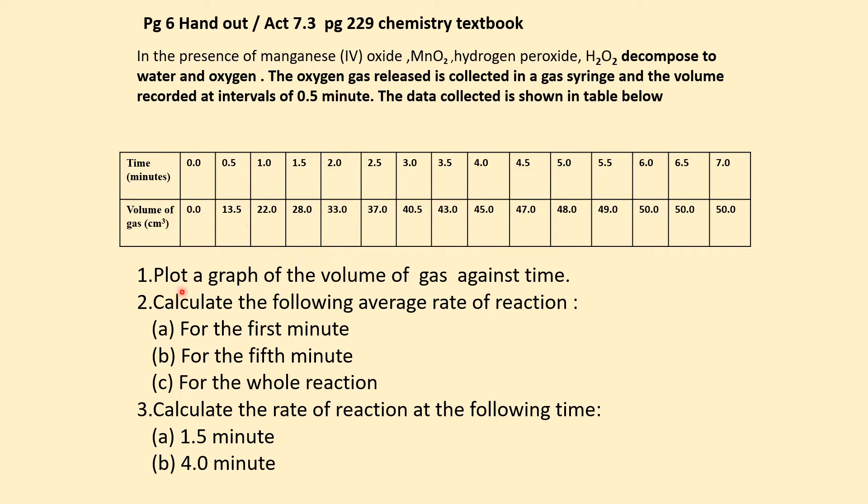The first step is to plot a graph of volume of gas against time. Please refer to the questions on page 6. There are three questions: one, draw the graph; two, calculate the average rate of reaction; and three, calculate the instantaneous rate of reaction at certain times.